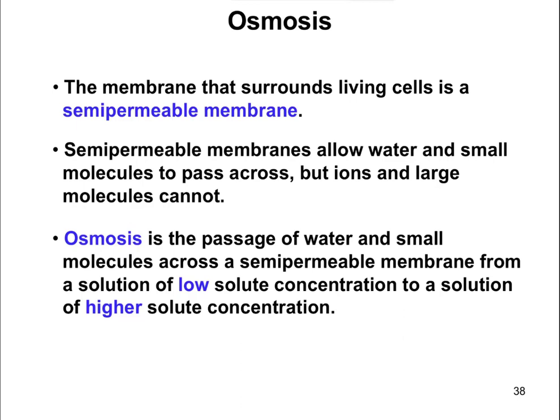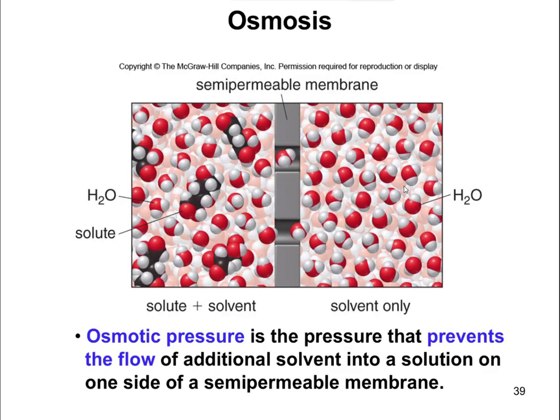So all the words can be confusing without pictures. Let's take a look at the picture. Here is a picture of two chambers separated by the semi-permeable membrane down the middle. The semi-permeable membrane in the middle is permeable to water and small molecules, but not larger molecules.